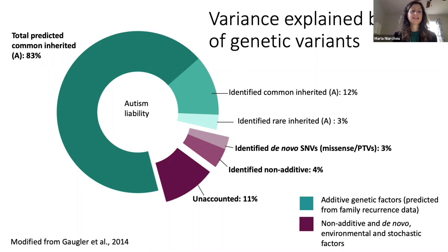Identified de novo missense and protein truncating SNVs and variation in non-genic regions together explain up to 3% of the variance. Additionally, known additive variation accounts for about 4% of the total variance.